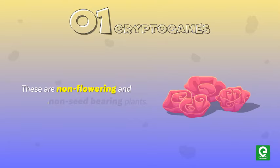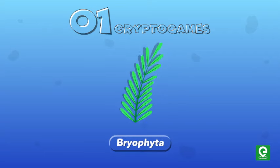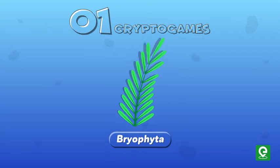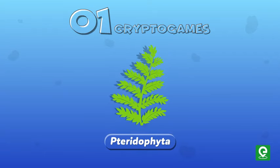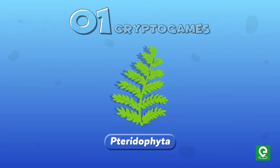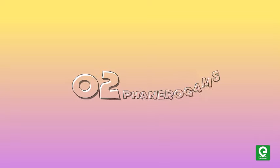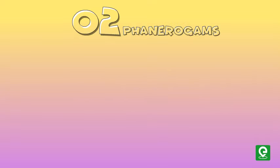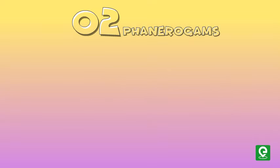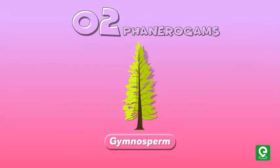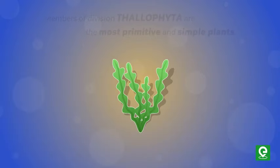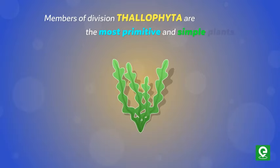All plants are grouped under two main categories. Number one: Cryptogams — these are non-flowering and non-seed-bearing plants, which include Thallophyta, Bryophyta, and Pteridophyta. Number two: Phanerogams — these are plants which include Gymnosperms and Angiosperms.